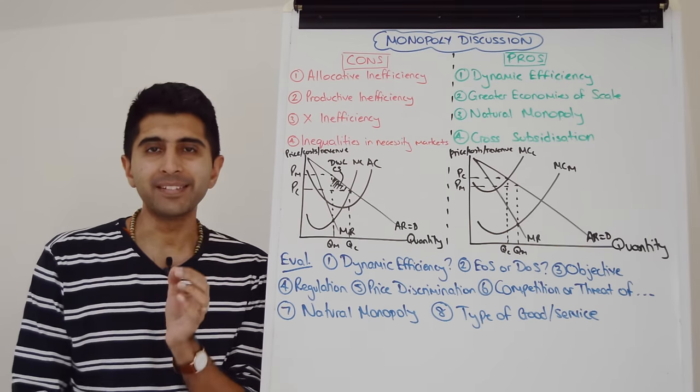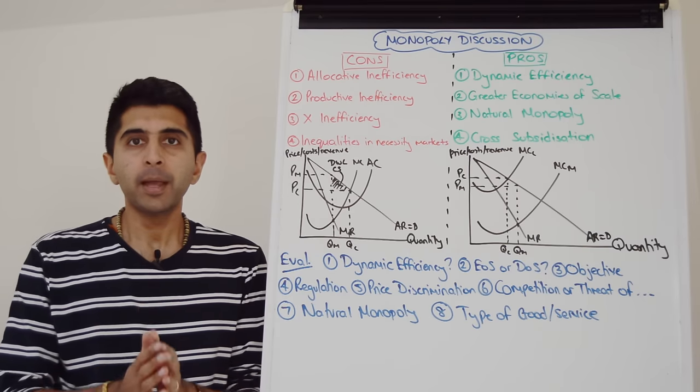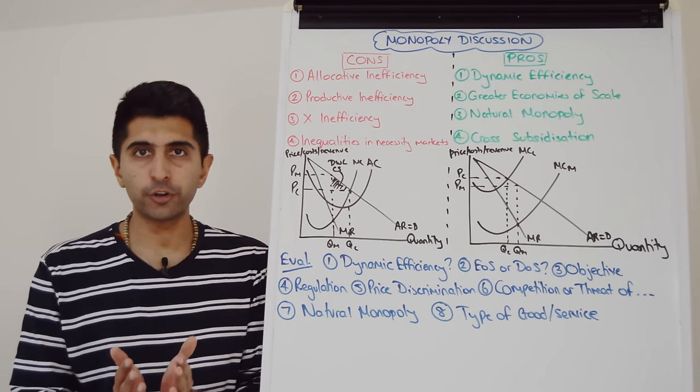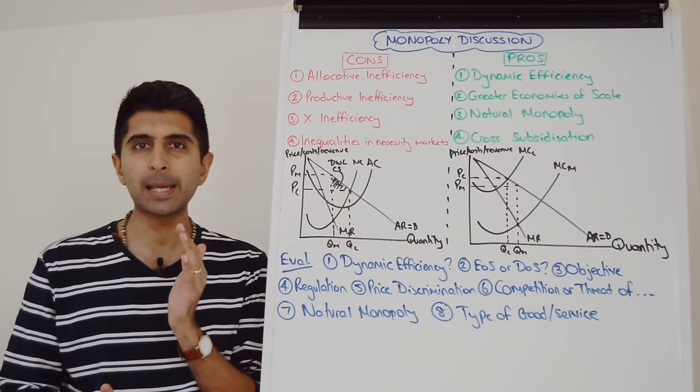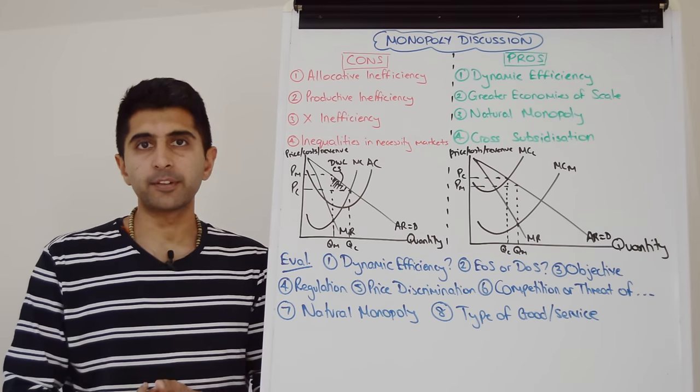The biggest issue is the allocative inefficiency that comes with a monopoly. Price is higher than marginal cost, meaning consumers are exploited, paying more than what it costs to produce. Lower consumer surplus comes as a result.